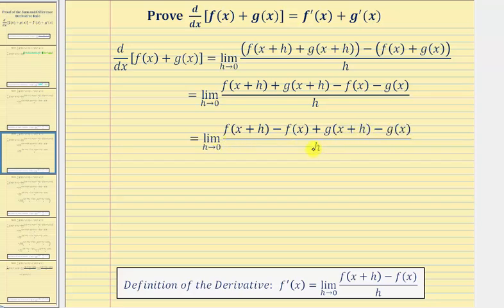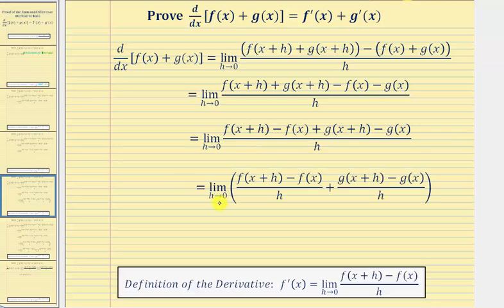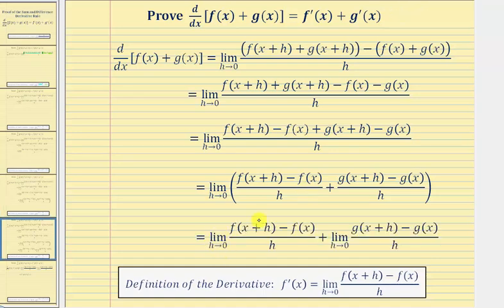Now we'll write the single fraction as a sum of two fractions with the denominator of h. When we do this, we have the limit as h approaches zero of the first fraction, which is f of the quantity x plus h minus f of x over h, plus the second fraction, g of the quantity x plus h minus g of x all over h. Now we have the limit as h approaches zero of this sum, which we can write as the sum of two limits: the limit as h approaches zero of the first fraction, plus the limit as h approaches zero of the second fraction.